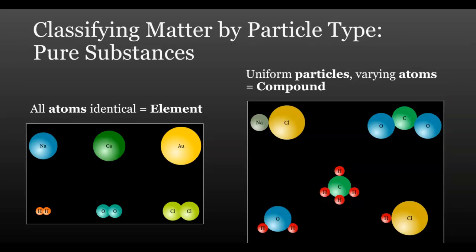The second way that we'll be classifying matter is based on the types of particles that it contains. Pure substances contain only one type of particle. In these illustrations, each individual type of atom is represented by a unique sphere. When all atoms are of the same type, we call the matter an element. There are 118 elements that scientists know of at this time, and they're all listed on your periodic table.